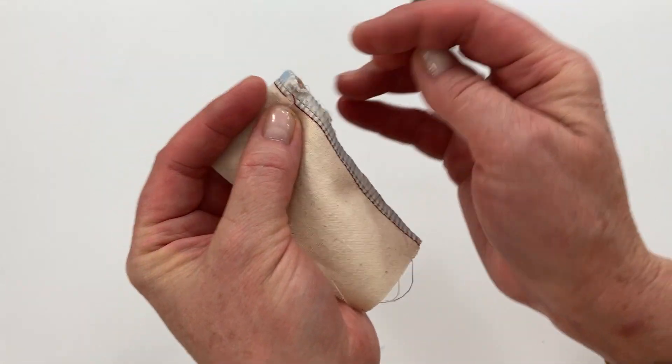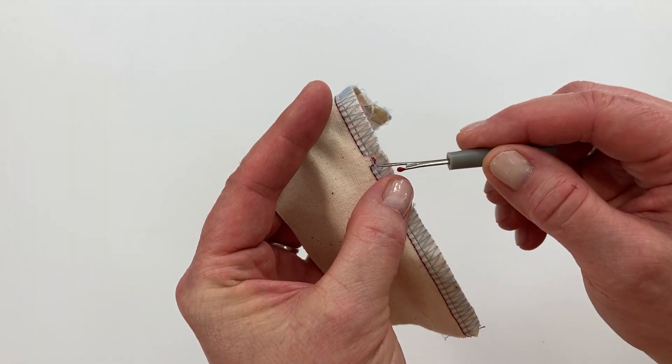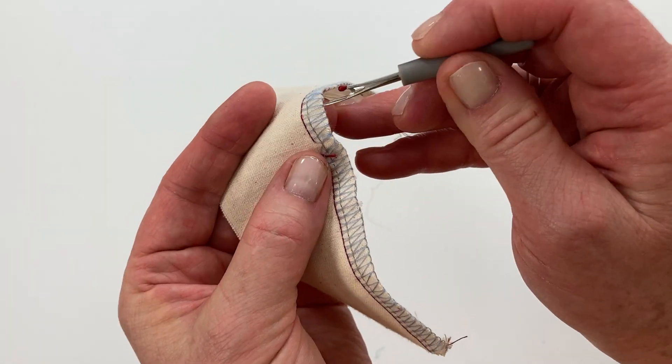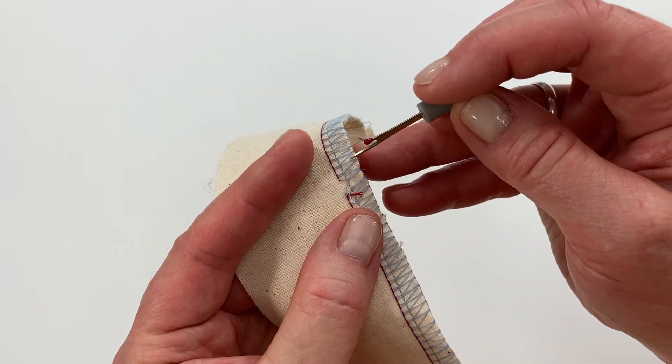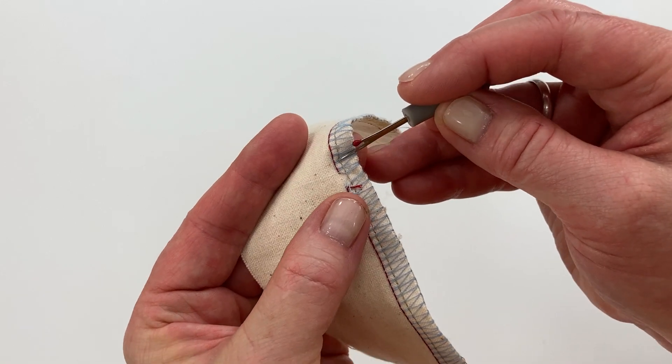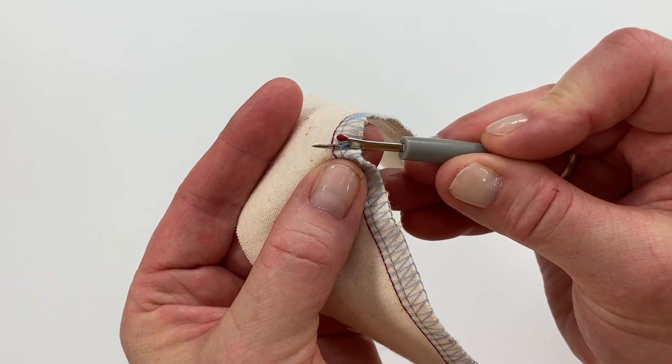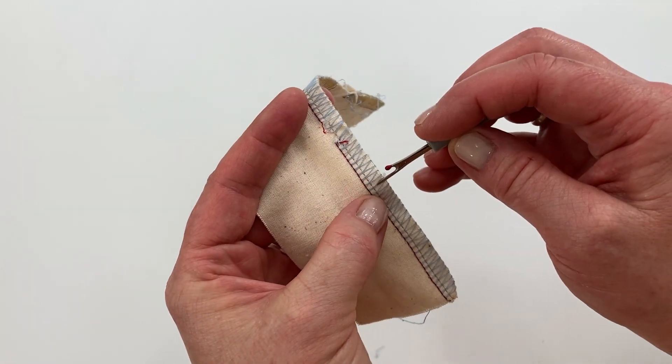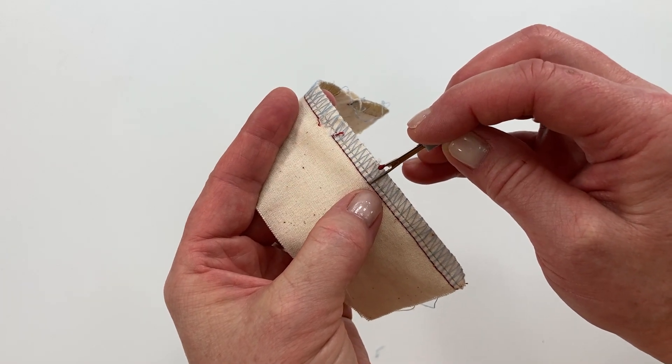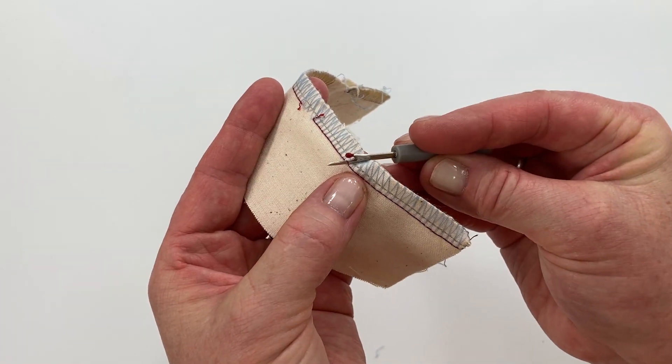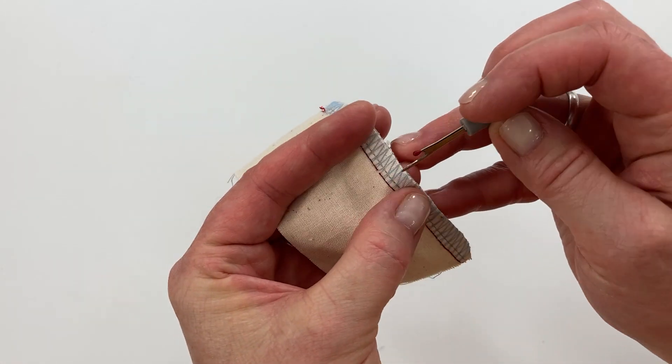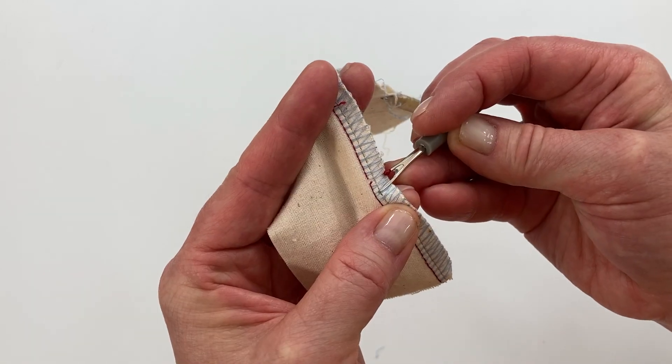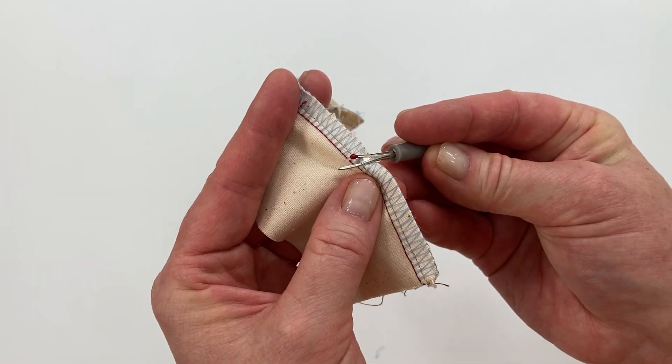Make sure that you're not getting the fabric and then if you slide the point of your unpicker down one of these looper thread V's it will guide the point right into that stitch and you can just break that. And then come down a little bit further and break another one. There's the red left needle thread and then I'll go down in a V of that blue right needle stitch and break it.